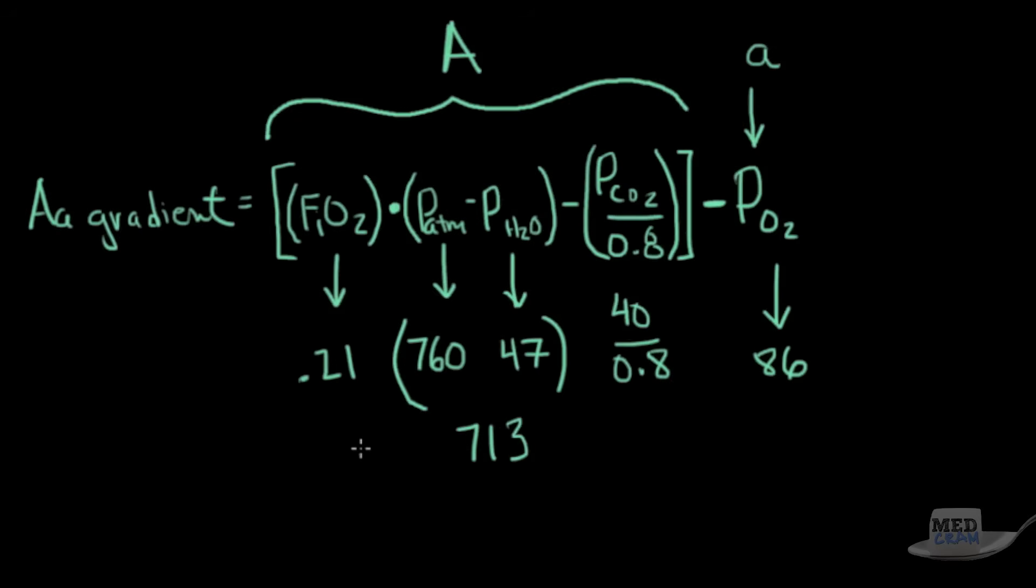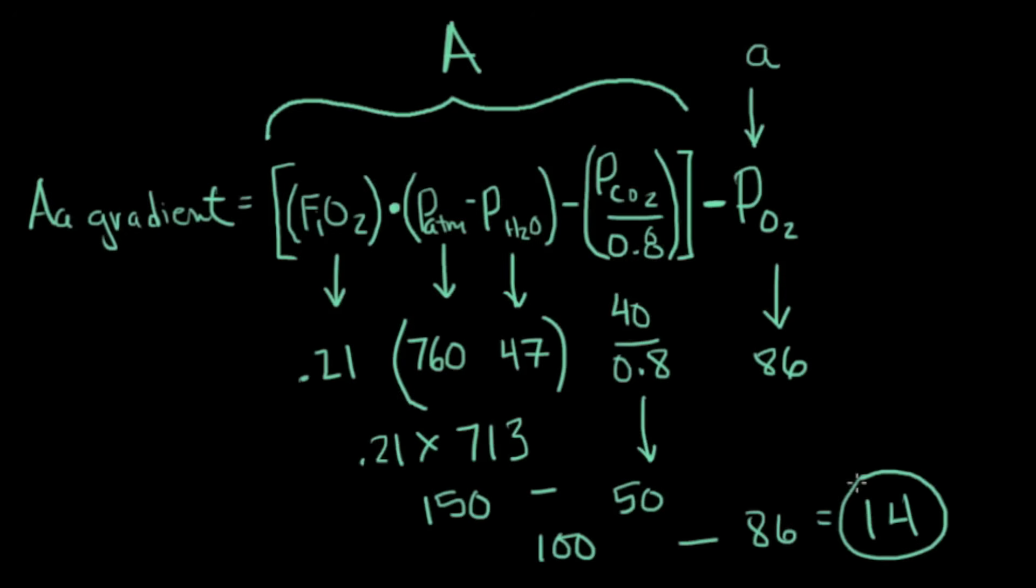So 760 minus 47 is 713. This times 0.21 is going to give us 150. 150 minus 50 is 100. 100 minus 86 is equal to about 14.